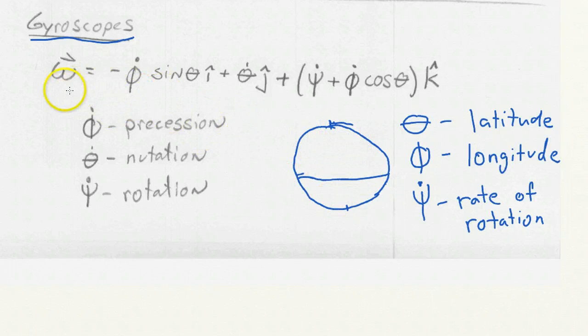And so the angular velocity here is written in terms of all these angles and the time derivatives of these angles. Now this wasn't applicable just for gyroscopes. We can really use these equations to define the motion of an axisymmetric body. So there's a body that spins along a symmetry axis.